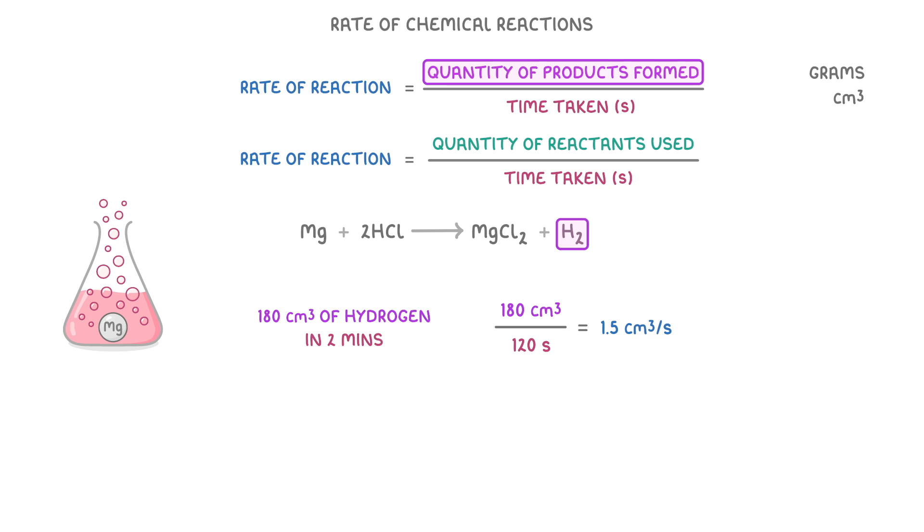Alternatively, if we had used 3 grams of magnesium, and were told that it took 4 minutes to disappear completely and get used up, then we could use the other equation, and do 3 grams divided by 4 times 60, so 240 seconds, which gives us 0.0125 grams per second.